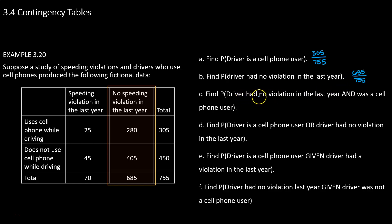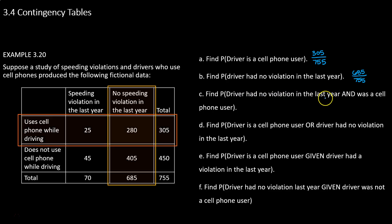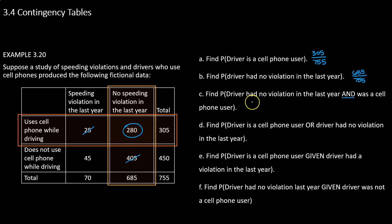Now here's where it gets more useful. Find the probability that the driver had no violation in the last year AND was a cell phone user. We're looking at a row and a column and saying 'and,' so we want drivers with both characteristics. That means 280 drivers who both use their phone and did not get a speeding violation, out of 755.